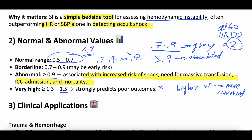The shock index is most helpful in gray cases when there isn't overt hypotension yet, but the heart rate is a little higher than physiologic and the systolic blood pressure is a little lower than physiologic. That magic number is somewhere around 0.8 or 0.9, depending on what you look at.